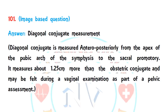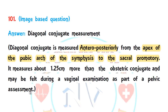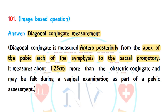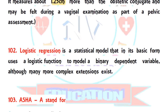Question 101 is an image-based question. The type of assessment shown in the image is diagonal conjugate measurement. The diagonal conjugate is measured anteroposteriorly from the inferior edge of the pubic arch to the sacral promontory. It is about 1.25 cm more than the obstetric conjugate and may be felt during vaginal examination as part of pelvic assessment.